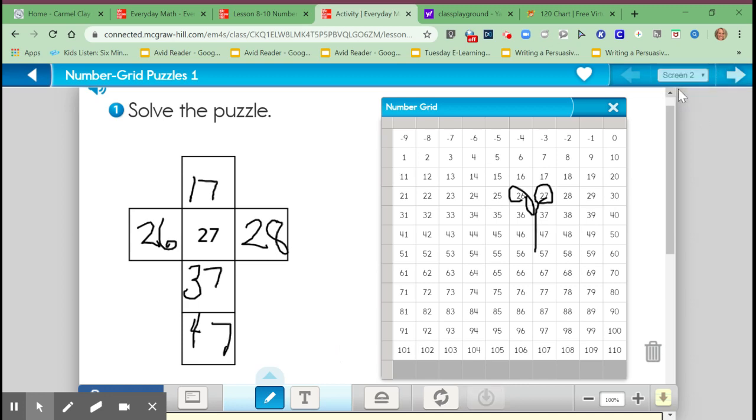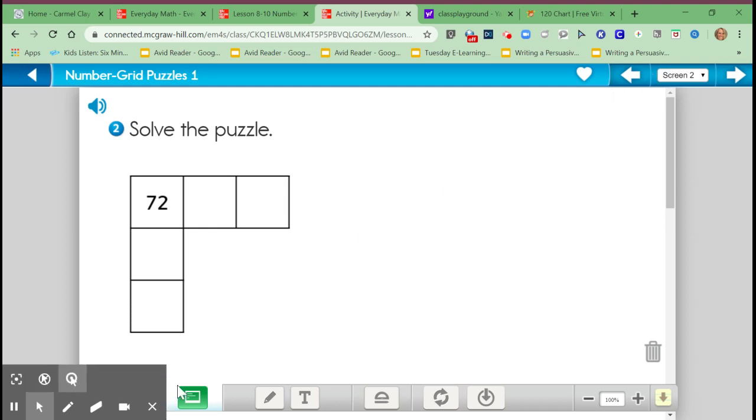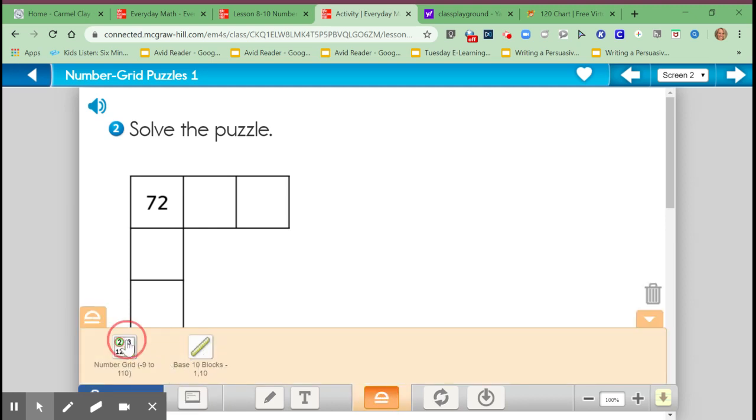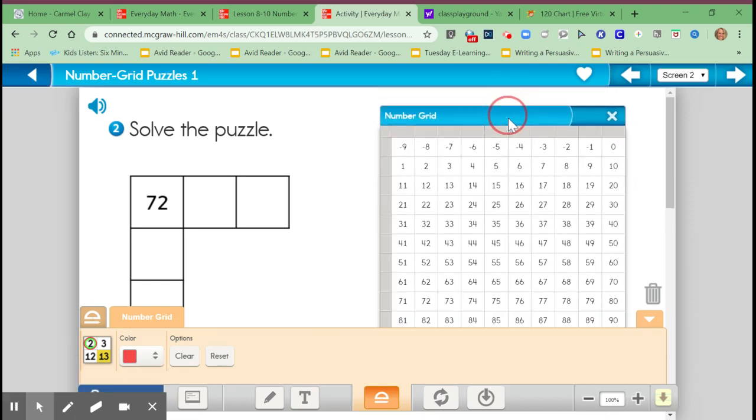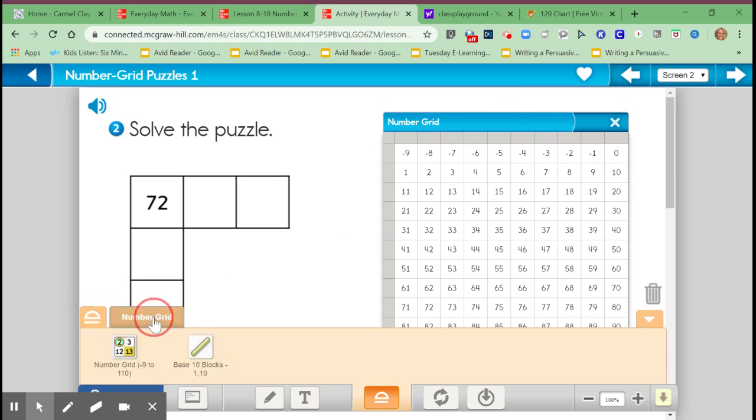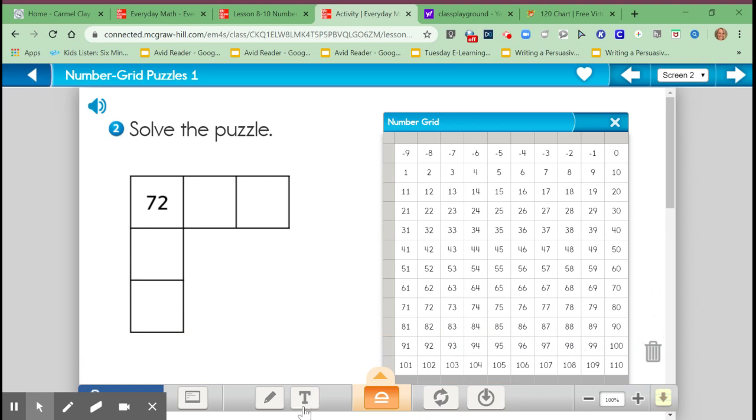Let's go to this next puzzle and see if we can figure it out. I am going to pull up another number grid, hundreds chart here to help us. So now we're going to find the 72 here in our number grid. So I'm looking for 72. And here it is.